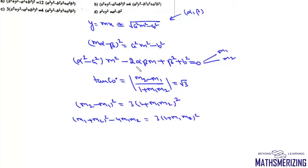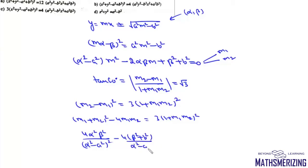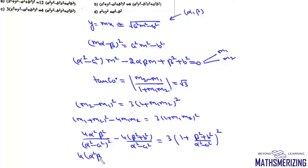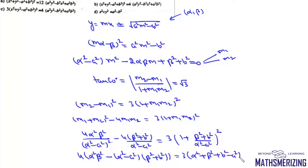Substituting the sum and product of roots from the quadratic: m₁+m₂ = 2αβ/(α²-a²) and m₁m₂ = (β²+b²)/(α²-a²). After substitution, (α²-a²)² cancels, and we get 4α²β² - (α²-a²)(β²+b²) = 3(α²-a²+β²+b²)... simplified further.